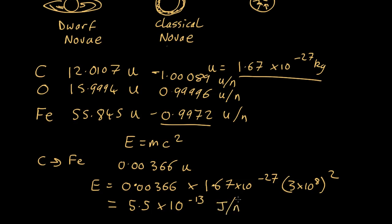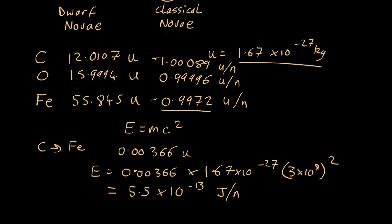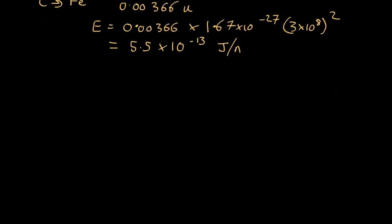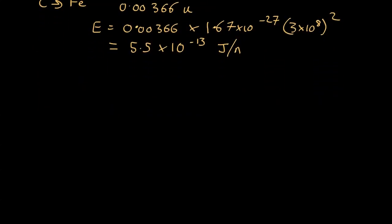And that comes out as 5.5 by 10 to the minus 13 joules per nucleon. So, every time you take a nucleon, a proton or a neutron, which is sitting inside a carbon nucleus, and do some nuclear physics to get it inside an iron nucleus, you get this much energy out. Doesn't sound like a lot.